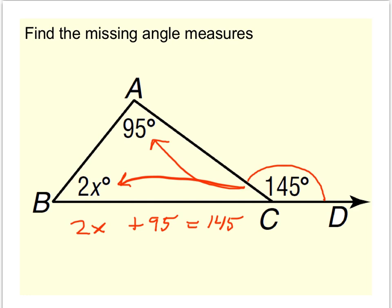So if we subtract 95 from both sides, we see 2x is equal to 50, which means x in this case would be 25. So that means that this angle would be 2 times x, or 2 times 25, so it would be 50 degrees.